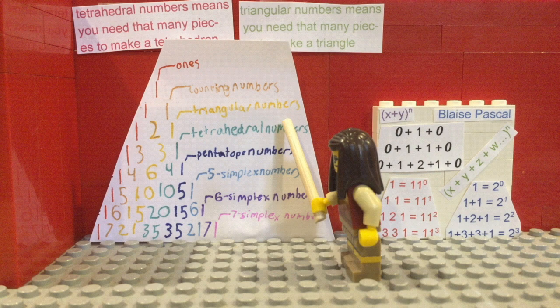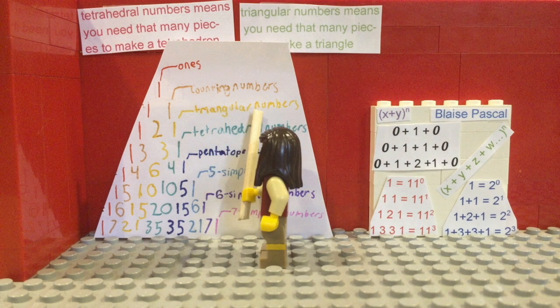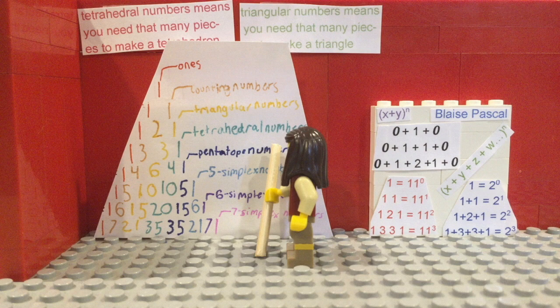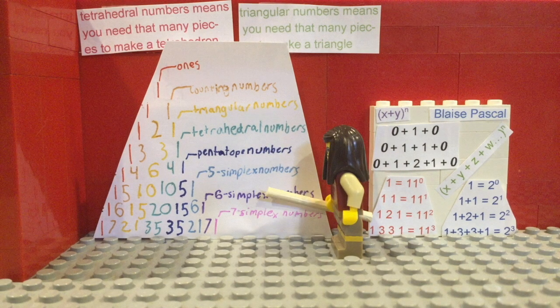This is Pascal's Triangle. There are the ones, counting numbers, triangular numbers, tetrahedral numbers, pentatope, five simplex, six simplex, and seven simplex numbers.